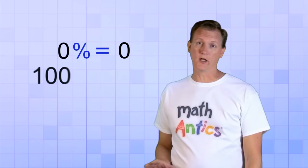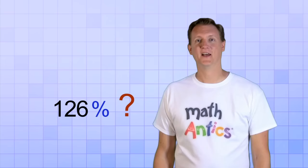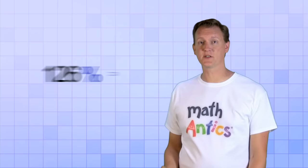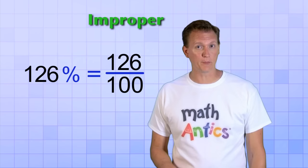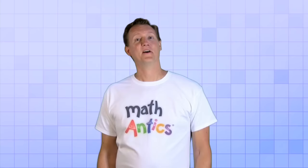Okay then, 0% is just 0 and 100% is just 1, but what about numbers bigger than 100? Can you have 126%? Yup, it works exactly the same way. 126% just means 126 over 100. And you know from the fractions videos, that's what we call an improper fraction. The top number is bigger than the bottom number, so the fraction's value will be greater than 1. Alright team, I want you to go out there and give me 110% effort in today's game! But coach, it would be improper for us to give 110% effort in today's game!